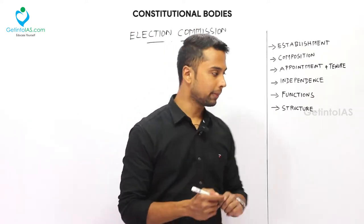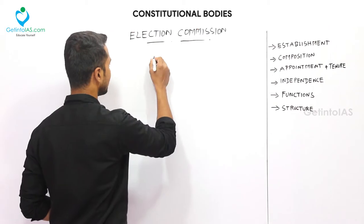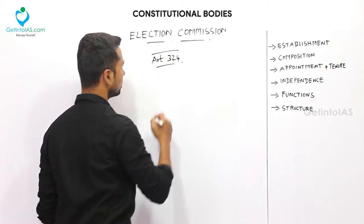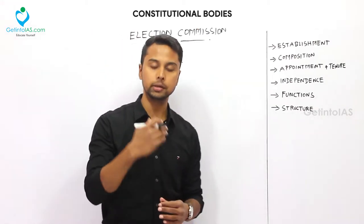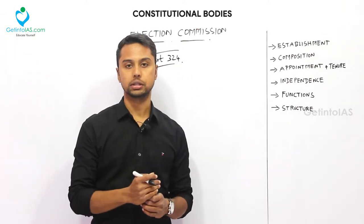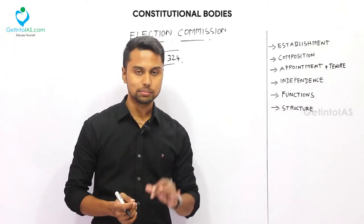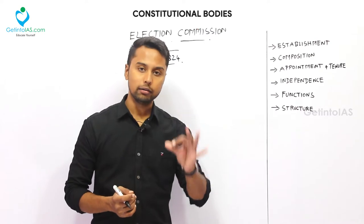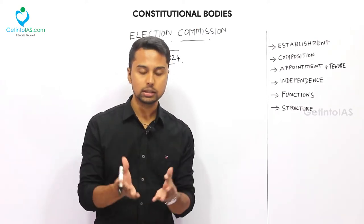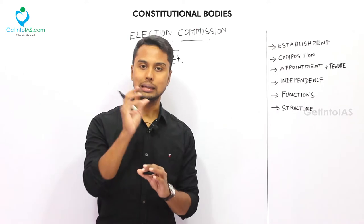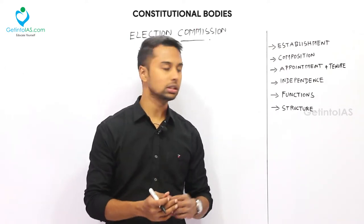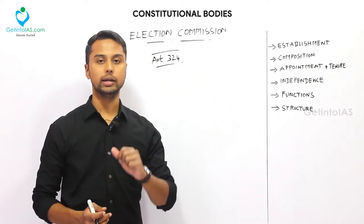We have a separate article for this Election Commission, which is Article 324. This article speaks about the setting up of the Election Commission and ensuring free and fair elections for the Parliament, State Assemblies, and for the elections of the President and Vice President. This is the main function and the core reason for the formation of the Election Commission under Article 324.